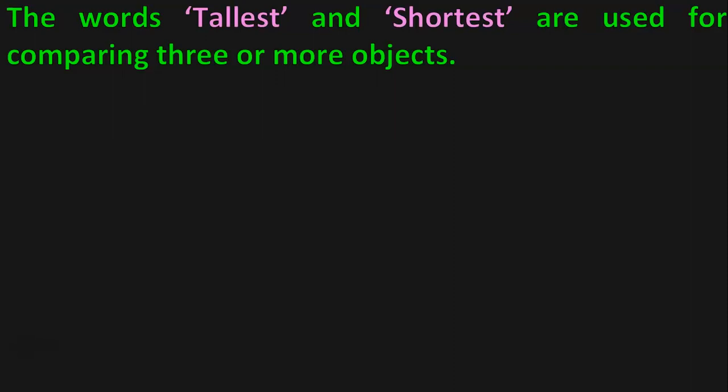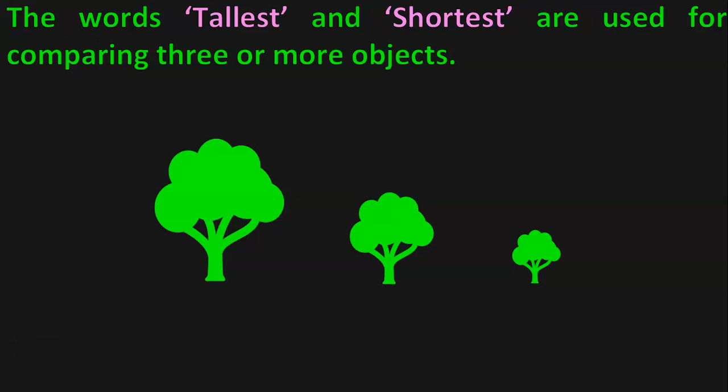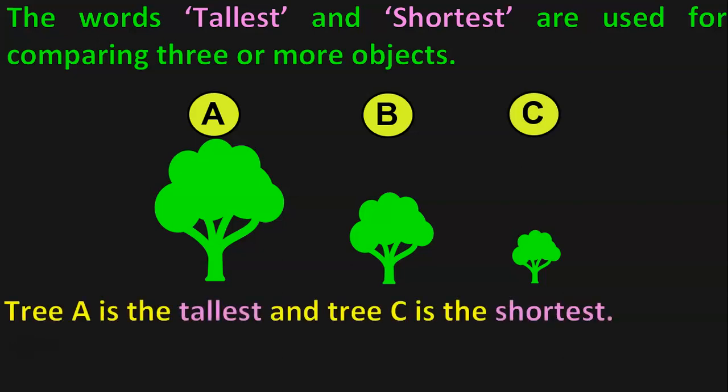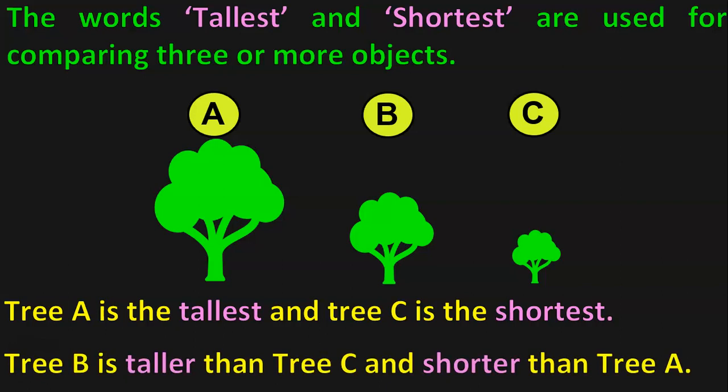The words tallest and shortest are used for comparing three or more objects. Let us take three trees now and name them as A, B and C. Which is the tallest tree here? Yes, Tree A is the tallest. And Tree C is the shortest. We can bring in the terms taller and shorter also here. Tree B is taller than Tree C and shorter than Tree A.